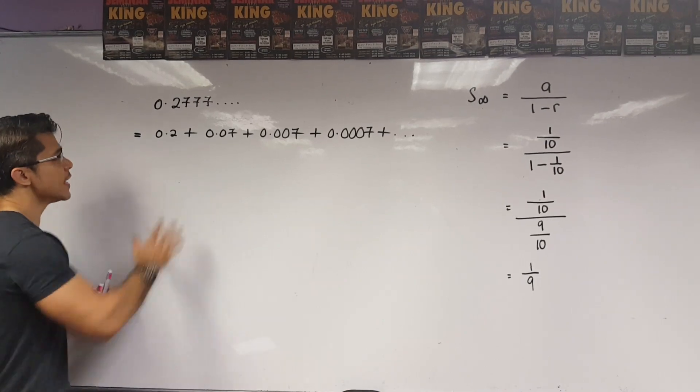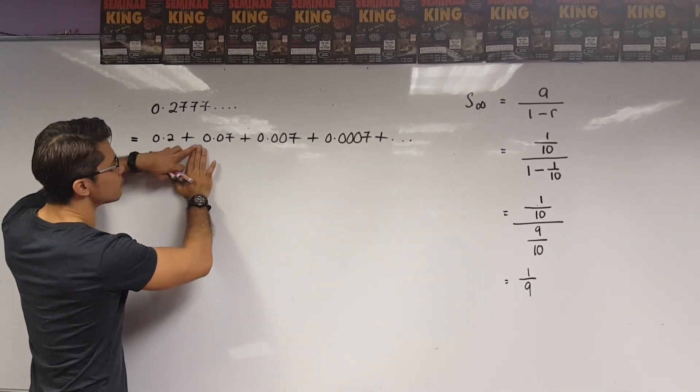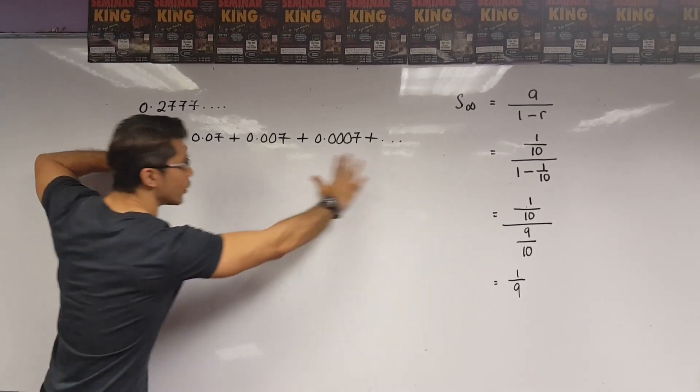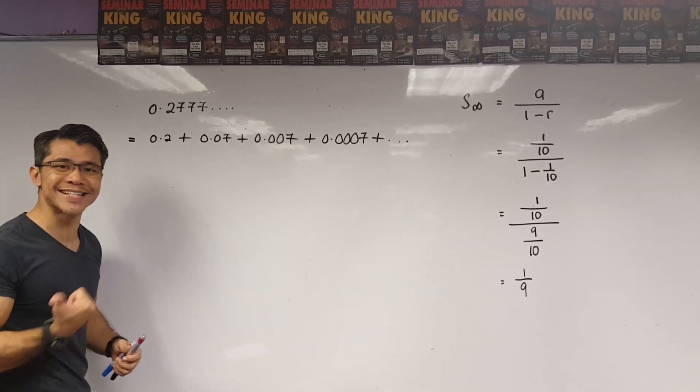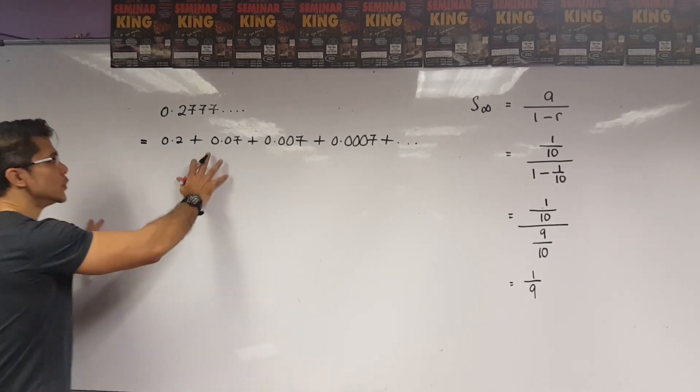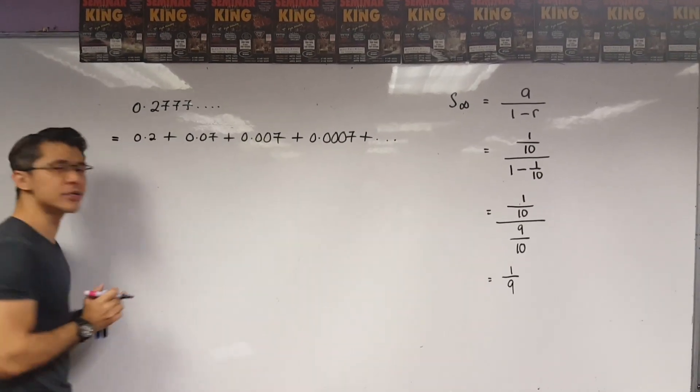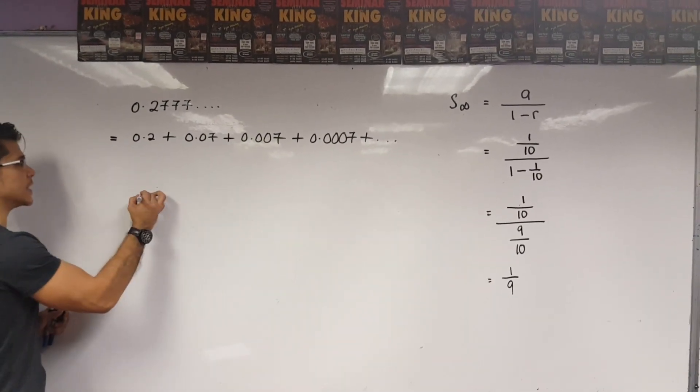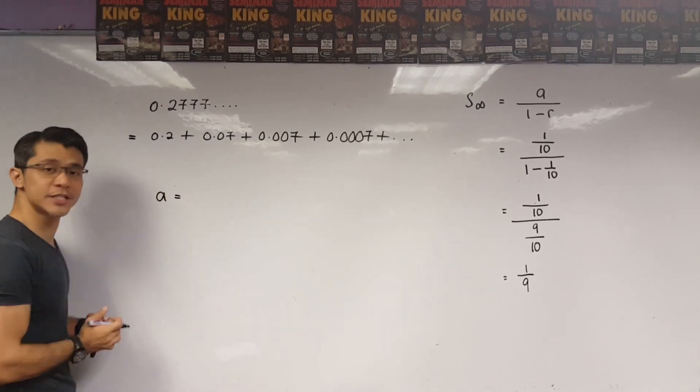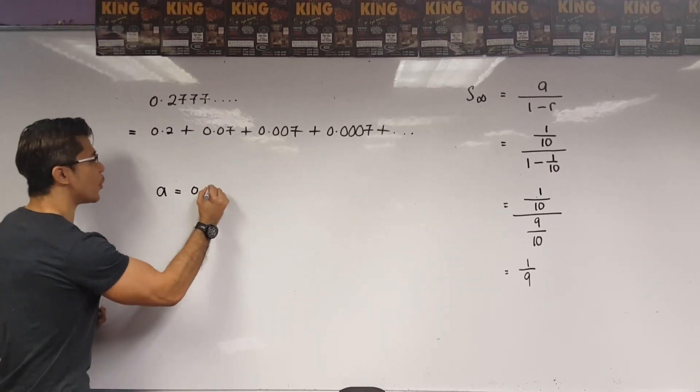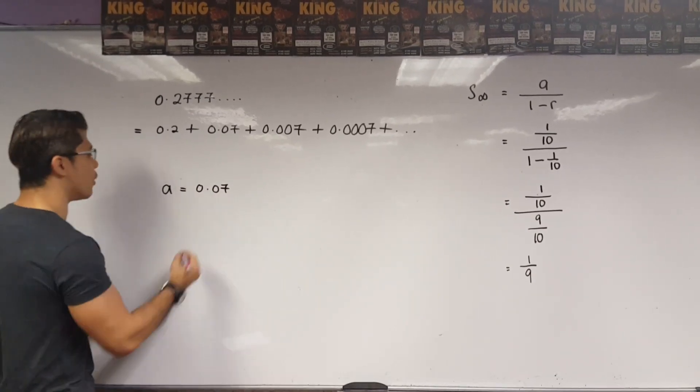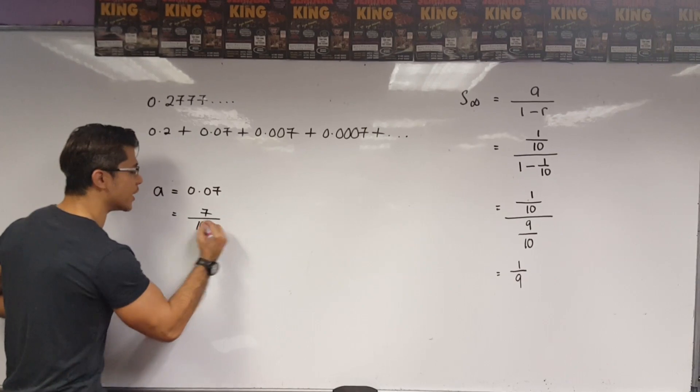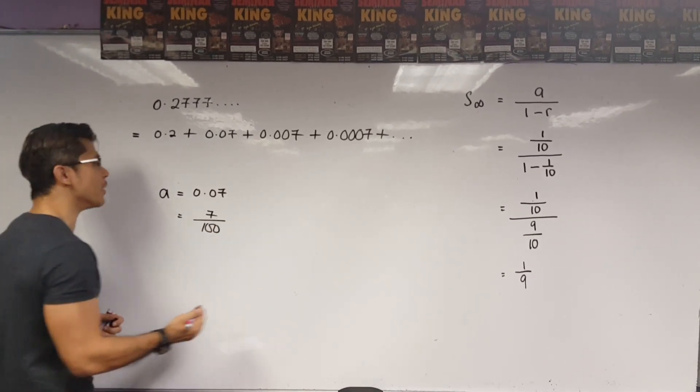Now, again, notice that the pattern is from 0.07 onwards. 0.2, again, seems like an odd number that sticks out. Doesn't matter. We'll get that. So, using this series of numbers, we notice that the A number, or the first term, is 0.07. Now, changing that to fraction form, I get 7 over 100.